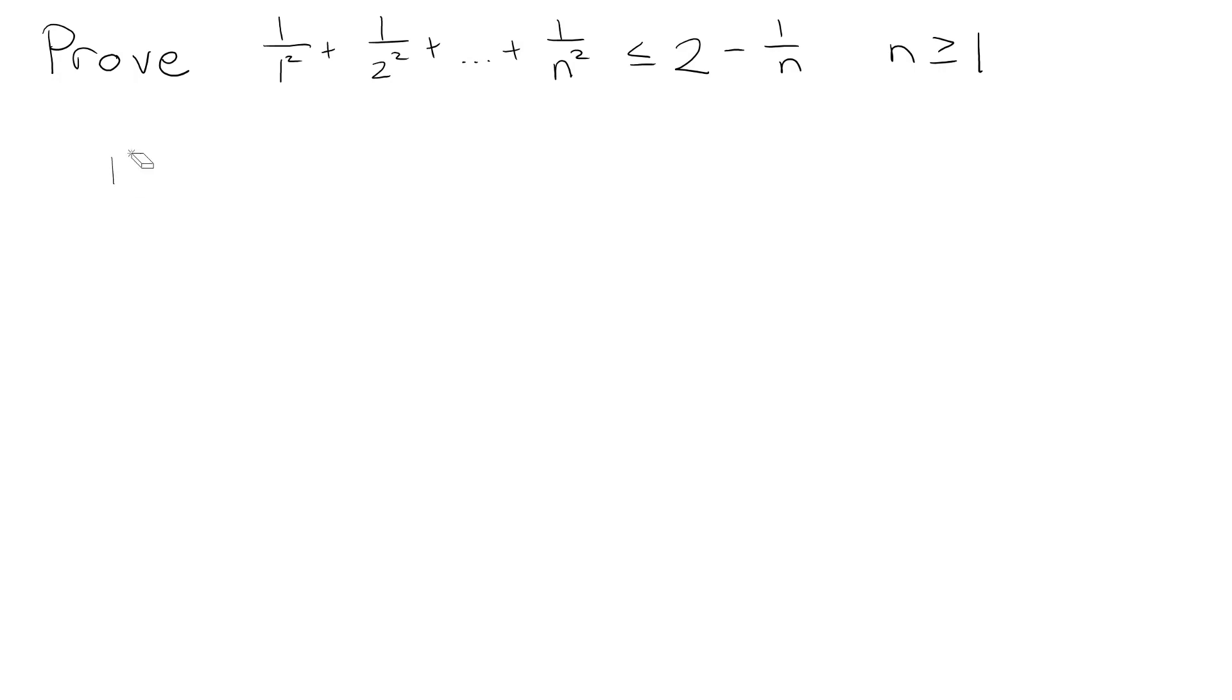Alright, but it still starts off the same. I'm going to start off by rewriting it as a summation just to make it easier to manipulate. So I can see that this is increasing 1, 2, 3, 4, 5 all the way to n. So I'm going to use i for the bottom, making it 1 over i squared, where i is going to start at 1 and go all the way to n. So the sum from i equals 1 to n of 1 over i squared has to be less than or equal to 2 minus 1 over n.